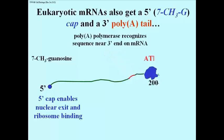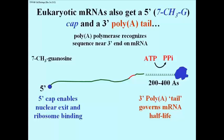Near the 5' end of the mRNA is a sequence that recognizes an enzyme called poly-A polymerase, which then binds and catalyzes the addition of several hundred adenosine nucleotides to the 3' end of the transcript.